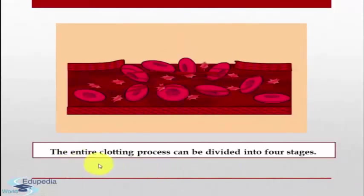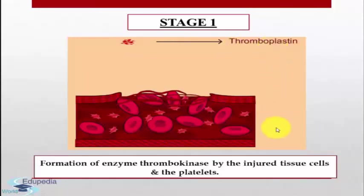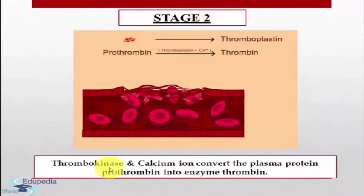The entire clotting process can be divided into four stages. The first stage is formation of the enzyme thrombokinase, also known as thromboplastin, by the injured tissue cells and the platelets. Here you can see that because of the injured tissue cells, the enzyme thromboplastin is formed. The next stage is thrombokinase and calcium ions converting the plasma protein prothrombin into the enzyme thrombin. Here you can see that prothrombin is converted into thrombin in the presence of thromboplastin and calcium ions.